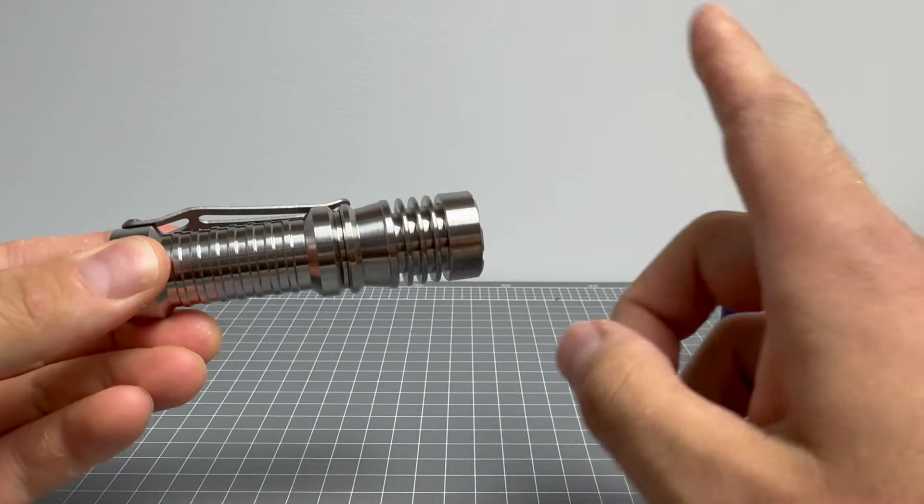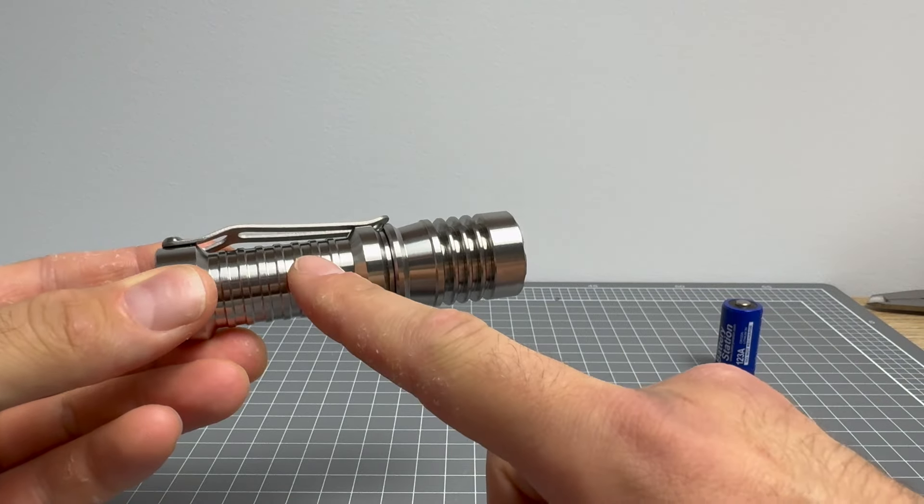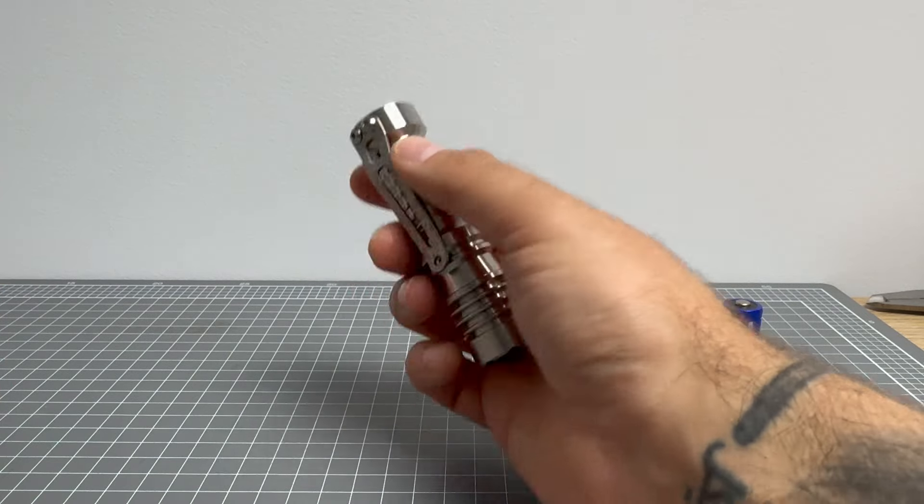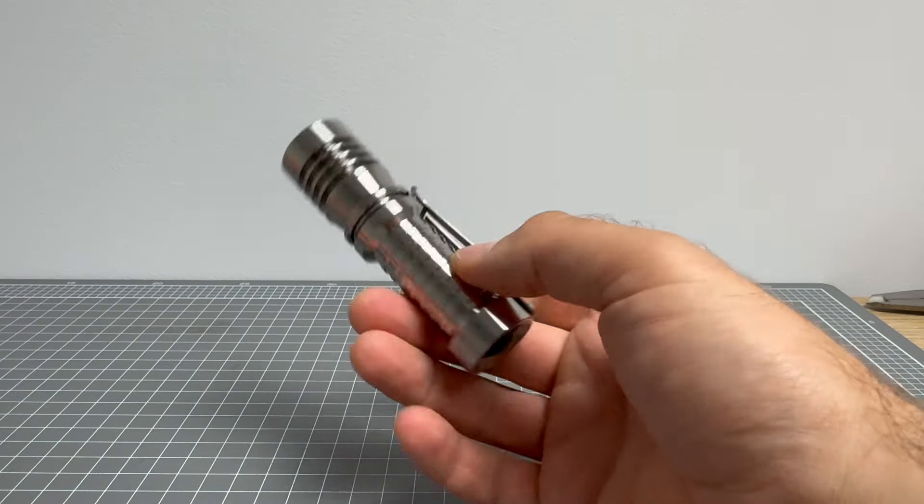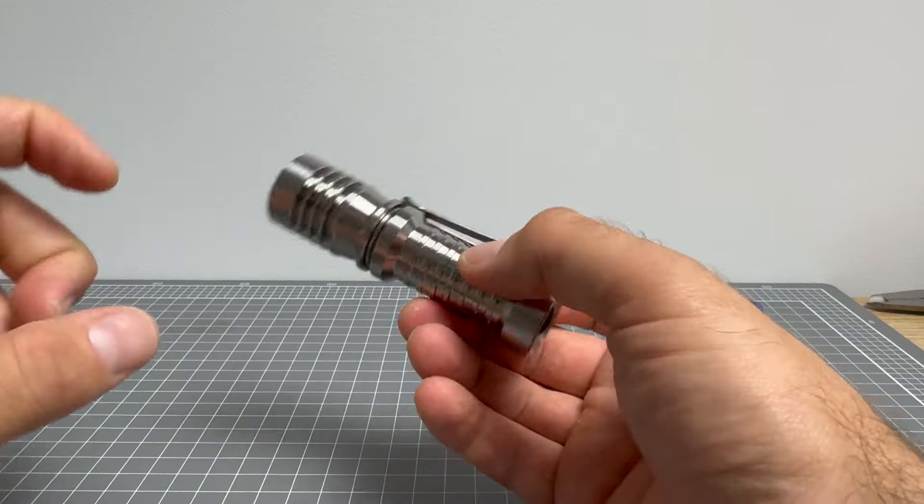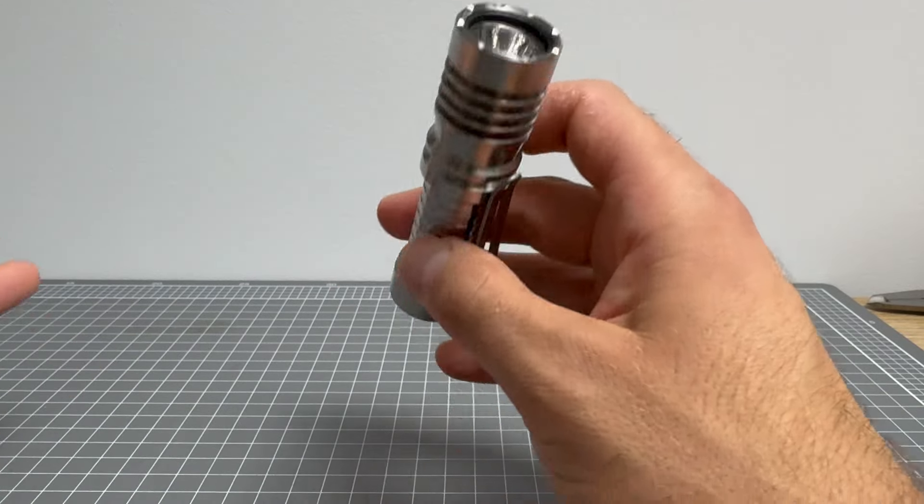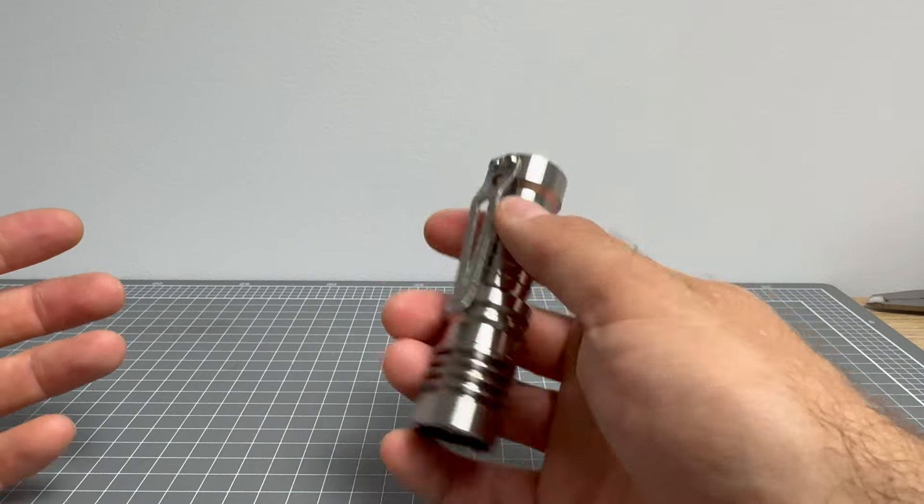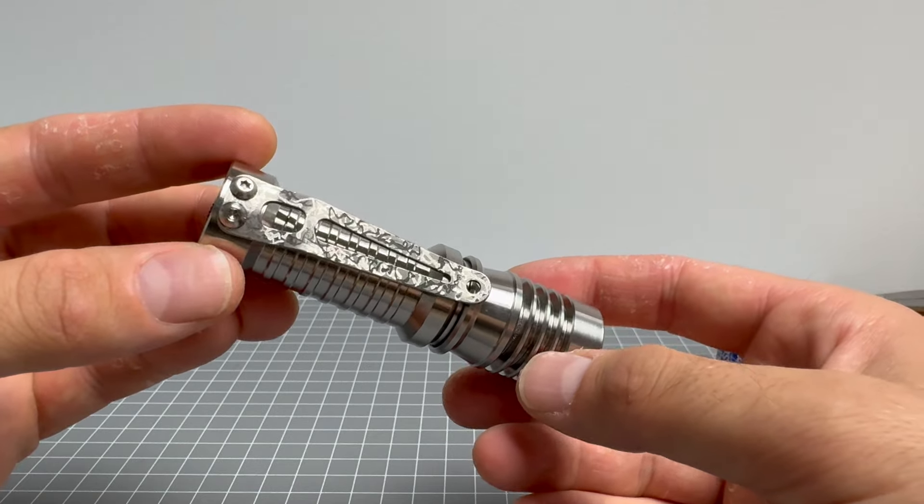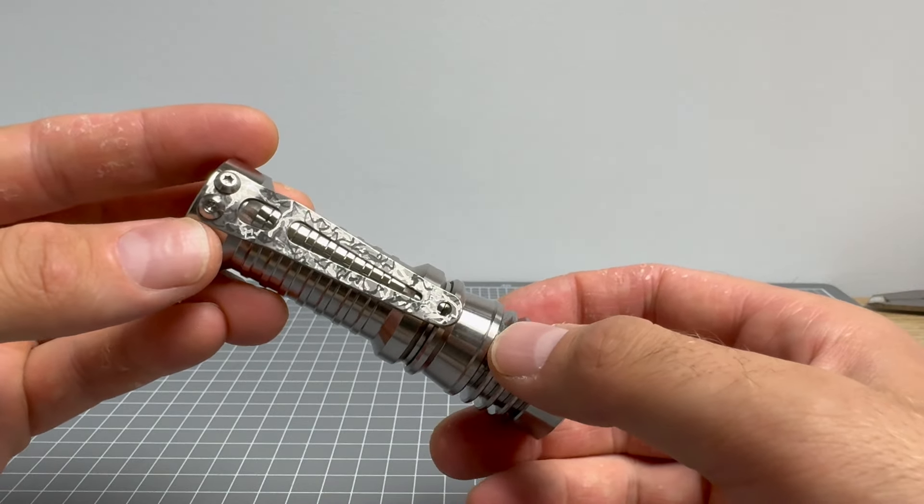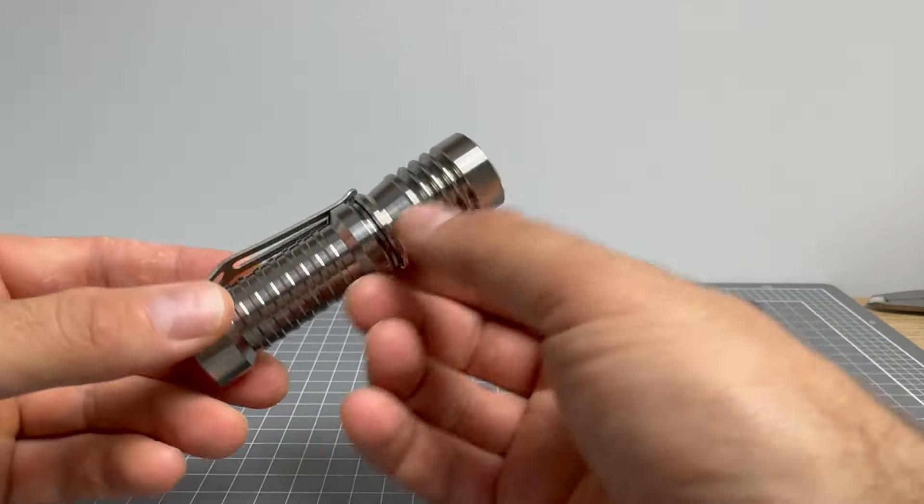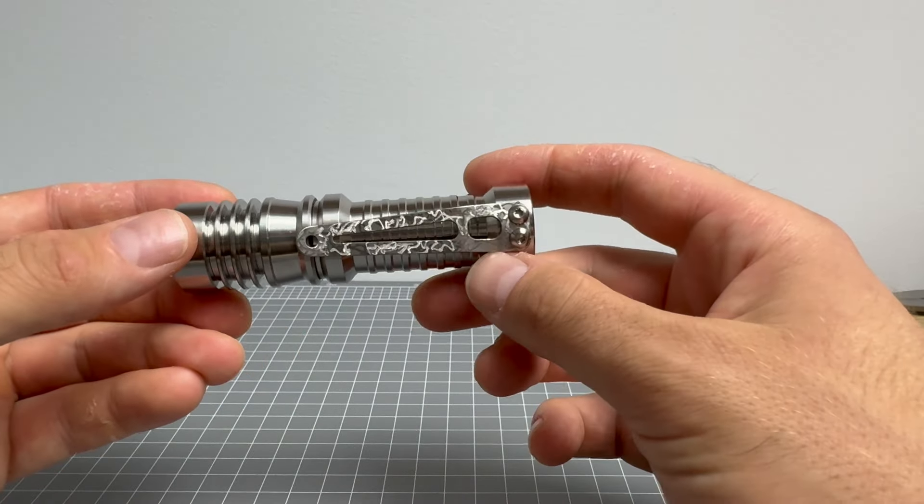This light has CR123 rechargeable 16340 options. It has a beautiful aesthetic. It is durable. It is tough. It is reliable. It is very, very easy to mod and to change the McClicky, change the driver, change the emitter, everything. The options are endless with this light. So, by no means am I saying that this light is not worth it. However, this, I mean, look at that. Every time that pocket clip catches my eye, I just go silent. Look at that, man, far out.